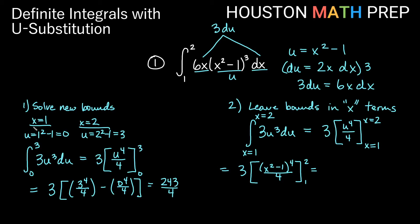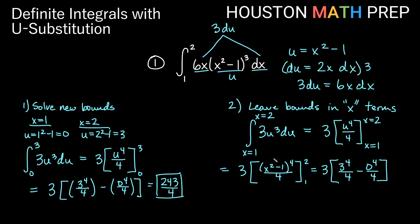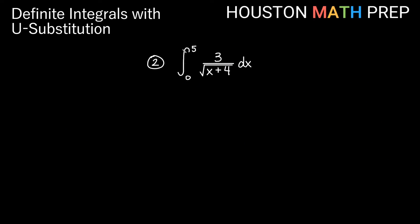Over here with method one, you have the extra steps of solving for new bounds in terms of u. For method two, you have one extra little step where you write u back in terms of x. I'll argue for the second method because we don't have extra steps where we might make a mistake solving new bounds, so I'm just going to leave bounds in future examples in terms of x. Plugging in x = 2 gives (4−1)⁴/4 = 3⁴/4, and x = 1 gives 0⁴/4 = 0, still yielding 243/4. We simply substitute back in terms of x and use the original bounds.